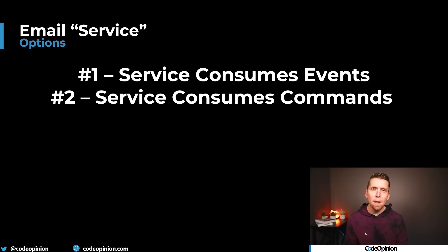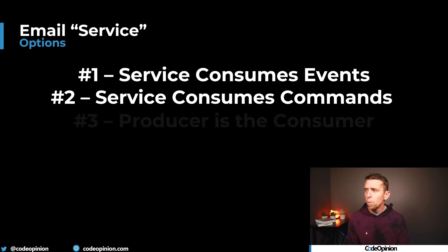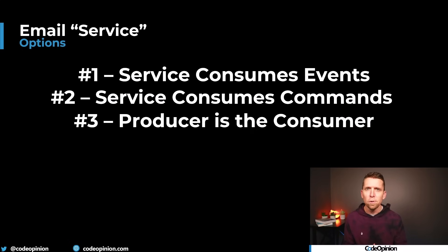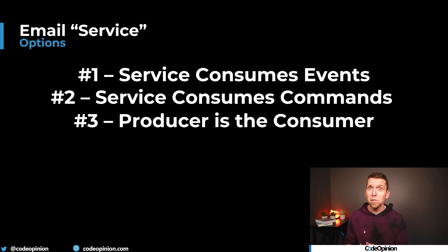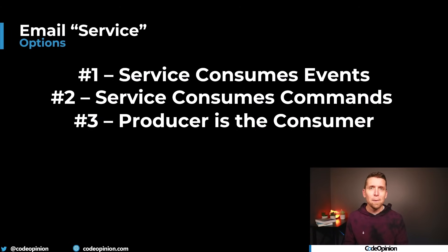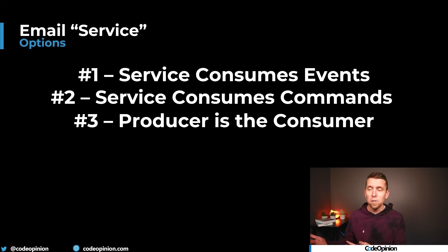There is a third option which I think is intuitive but might not be obvious: the producer is the consumer. Whether you're using commands and queues or events and publish/subscribe, the service that's actually producing the event or command is the one consuming it. In the case of sending the shipping email, it's not a separate email service doing that composition — it's the boundary that's producing the command or event, likely the shipping service.